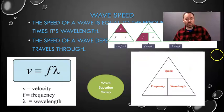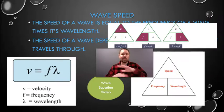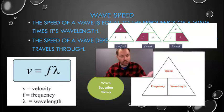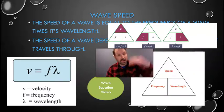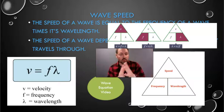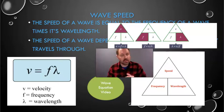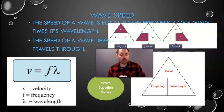We're going to skip the wave speed calculation for right now — there's some algebra involved. But the things you need to know today: wave amplitude, which is how high a wave is or how squished a wave is; wavelength, which is how long a wave is from crest to crest or trough to trough; and frequency of a wave, which is how many waves pass a certain point in a certain amount of time. Those are the three main things you need to know today. Have a great day.